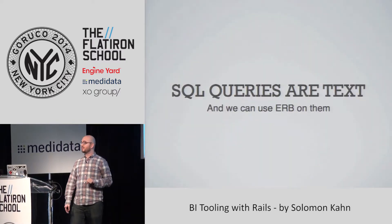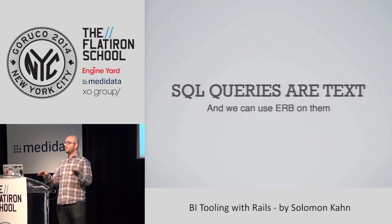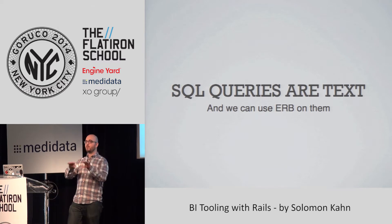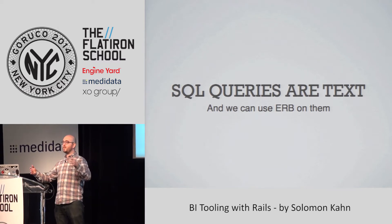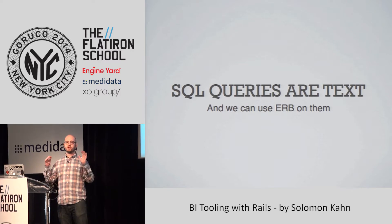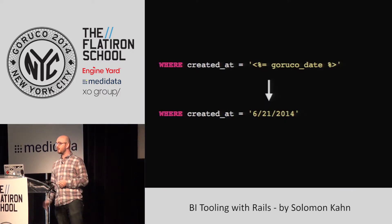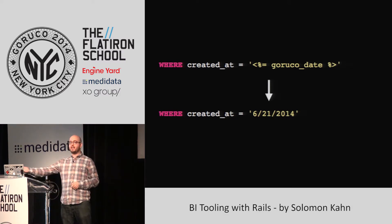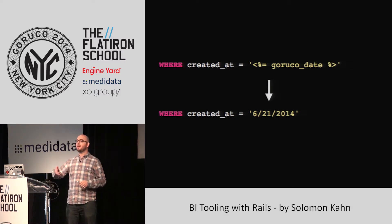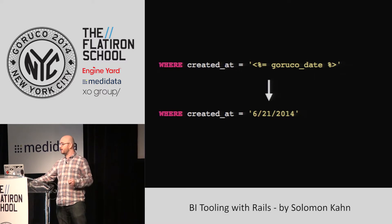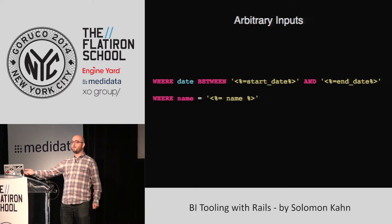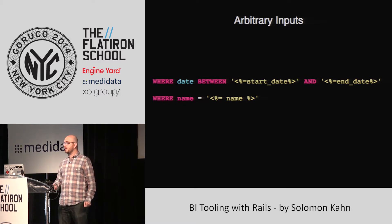The next insight was that SQL queries are just text, and we can use ERB on them. So instead of thinking of it as a very specific SQL query, we can think of it as a SQL template. For example, when I write a query, I could say WHERE created_at equals a date parameter — and then next year, the person running this just has to change that date. They don't need to rewrite the entire query. This allows for arbitrary inputs: the same query can be run for any start date or end date, ever.